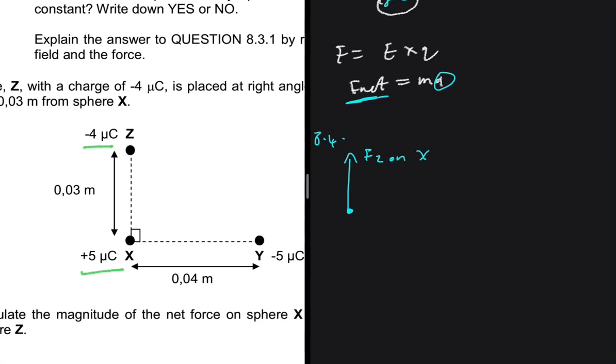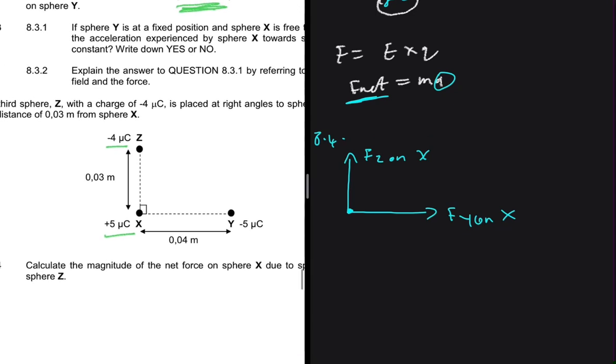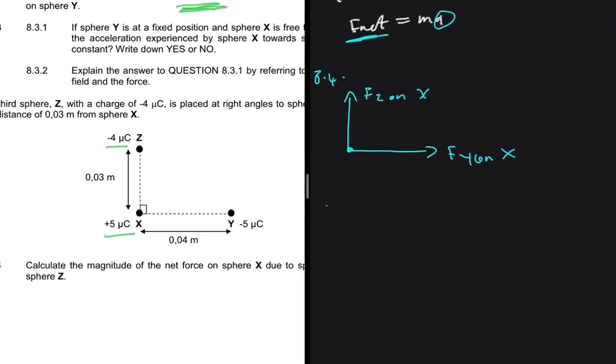Now let's look at X and Y. We have a positive and a negative. So X will be pulled by Y towards the right, while X is pulling Y towards the left. So if we're only interested in what's happening to X, then we're going to have something of this manner. So we have F_Y on X. So now that we have this, we can go ahead and calculate the magnitudes of these forces. So we're going to have F_Z on X being equal to K Q1 Q2 divided by R squared.